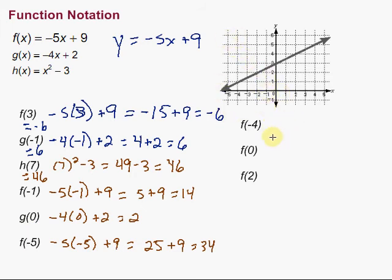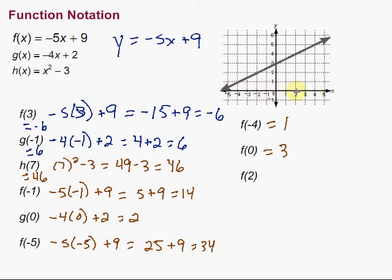If we're given a graph, we can also find the values of f for various inputs. For f of negative 4, we find negative 4 on the x-axis and see what the corresponding y value is — we go up to the graph, and that's at 1. So f of negative 4 equals 1. For f of 0, we find 0 on the x-axis, go to the graph, and that's 3. So f of 0 is 3. For f of 2, we find 2 on the x-axis, go up to the graph, and the corresponding y value is 4. So f of 2 is 4.